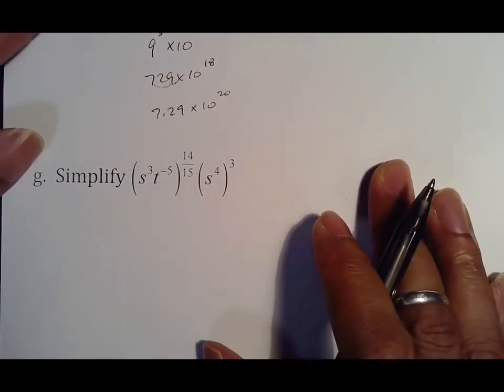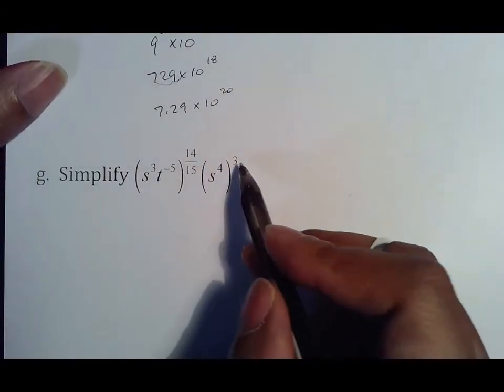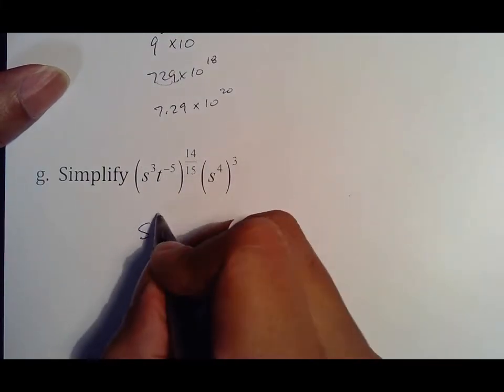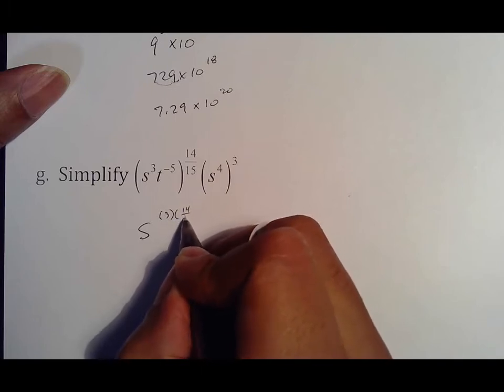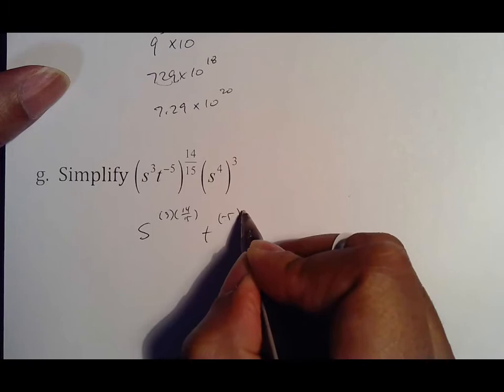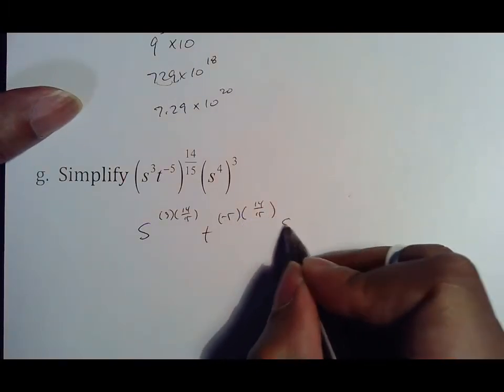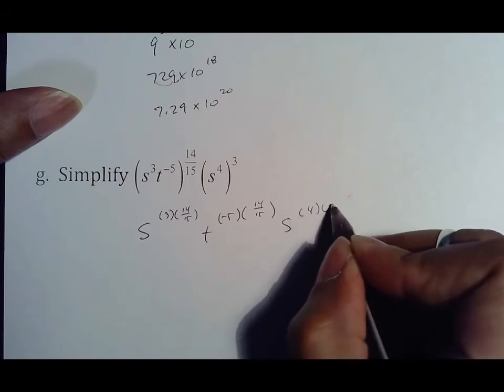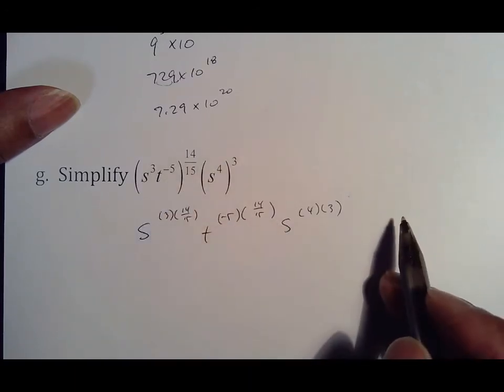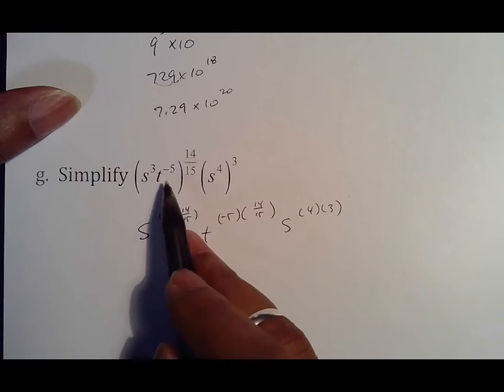And then g, which is just a whole bunch of stuff. First thing I would do whenever you see a bunch is get rid of these exponents by distributing. So it'll be s to the 3 times 14 fifths, t to the negative 5 times 14 fifths, s to the 4 times 3. Get rid of the big parentheses and everything kind of simplifies.